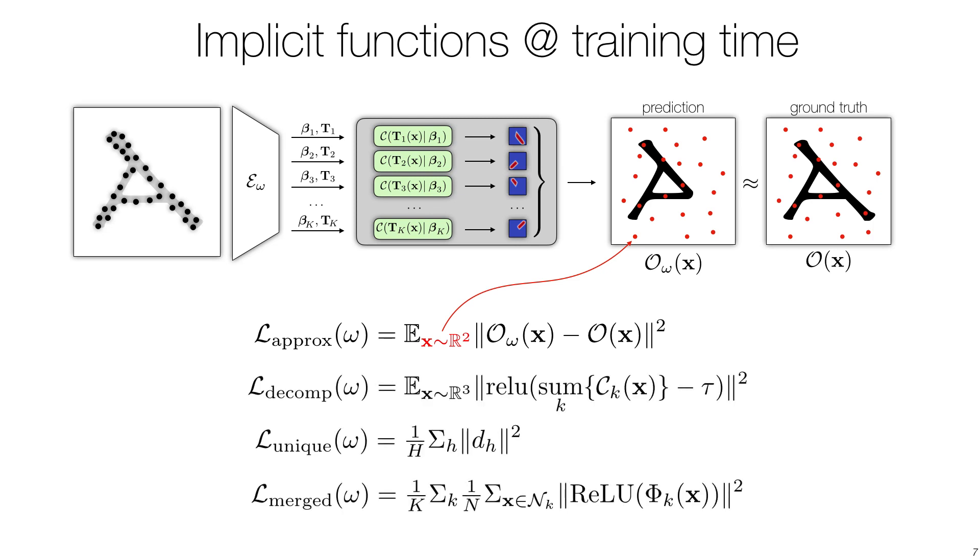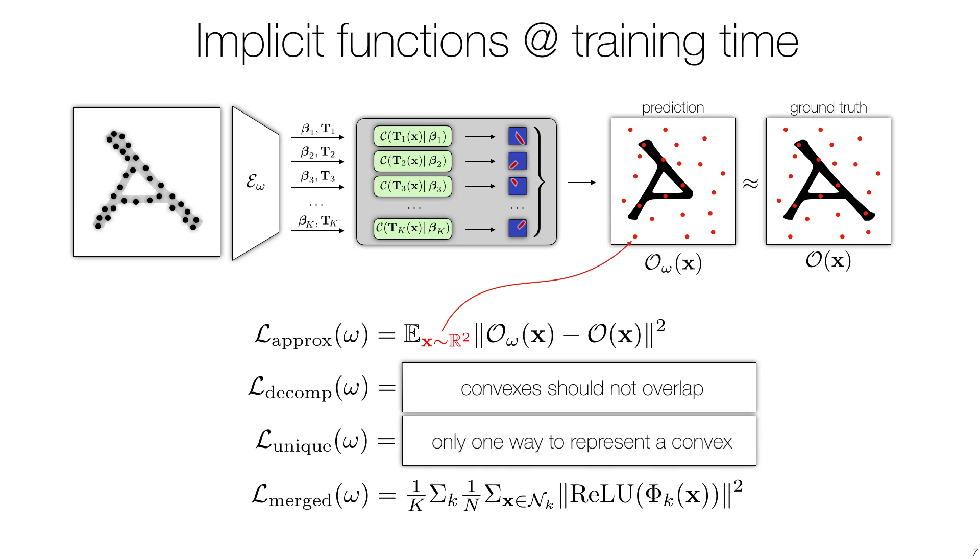We also employ auxiliary losses to help convergence, by encouraging convexes not to overlap, removing null space in the convex parameterization, and ensuring that gradients do not vanish.